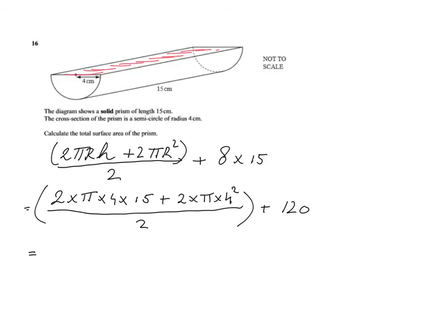Now I'm going to grab my calculator. I'm going to work that out. So 2 times π times 4 times 15, plus 2 times π times 16 equals... I'm just going to write down that's 152π over 2 plus 120.